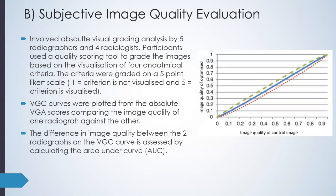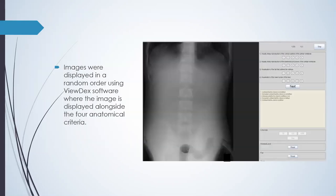For the subjective image quality evaluation, this involved absolute visual grading analysis by five radiographers and four radiologists. Participants used a quality scoring tool to grade images based on the visualization of four anatomical criteria, graded on a five-point Likert scale — one indicated the criterion was not visualized and five meaning it was visualized. VGC (visual grading characteristic) curves were plotted from the absolute VGA scores, comparing image quality between radiographs by calculating the area under the curve. Images were displayed in random order using VUDEX software, showing the image alongside the four anatomical criteria, with exposure parameters not shown to participants.